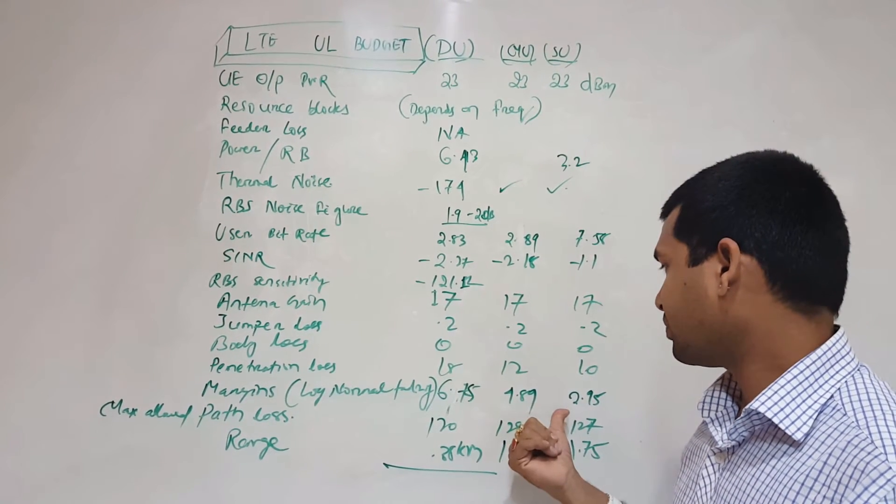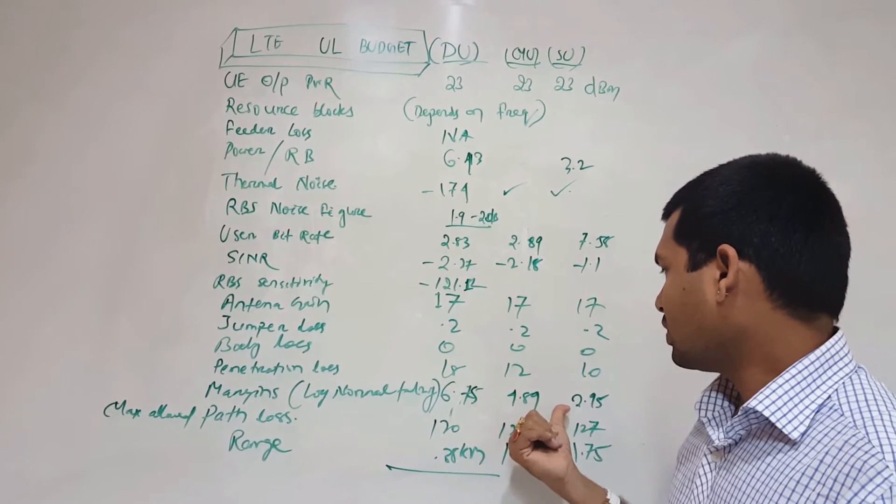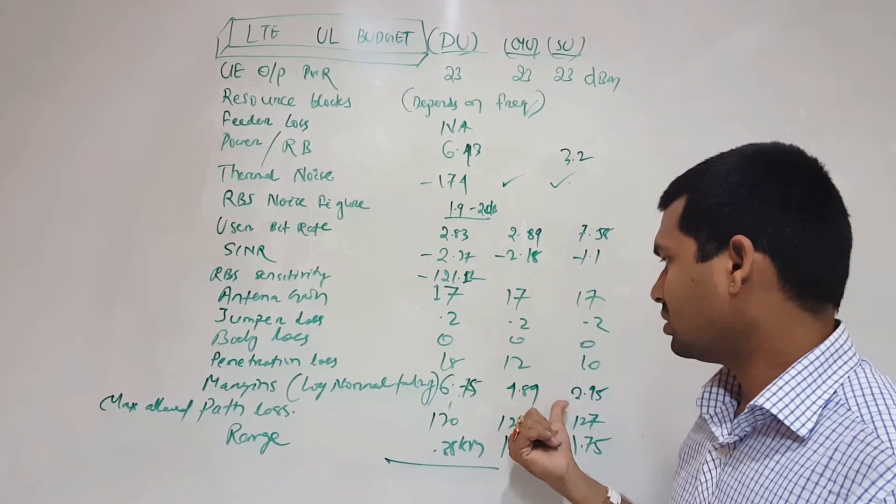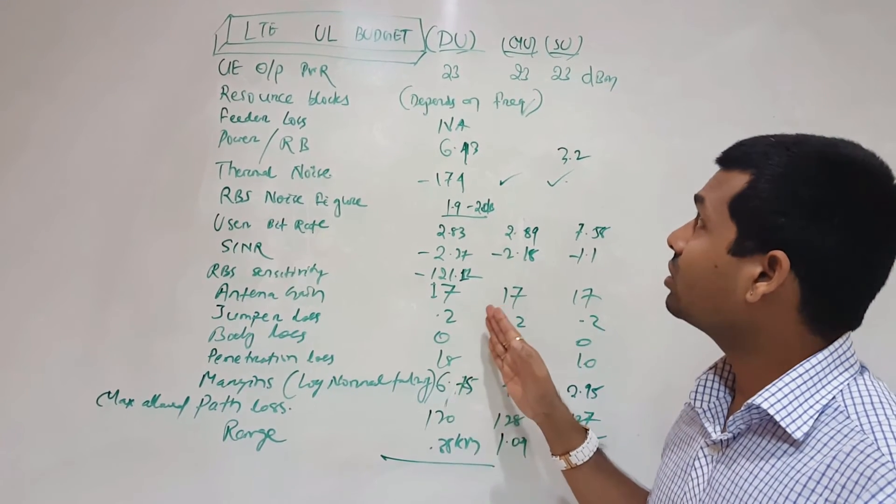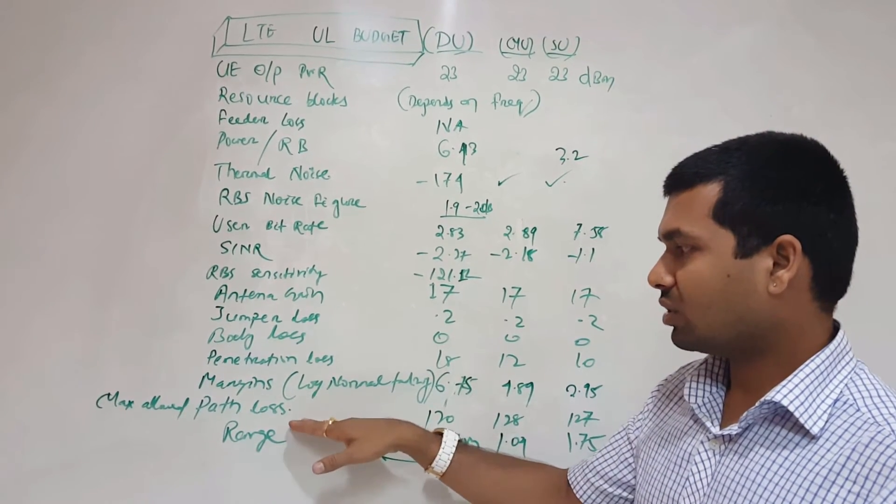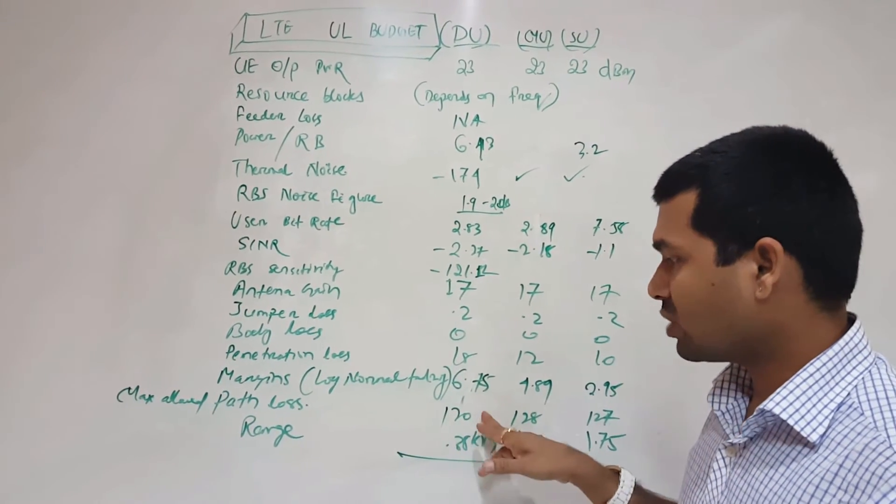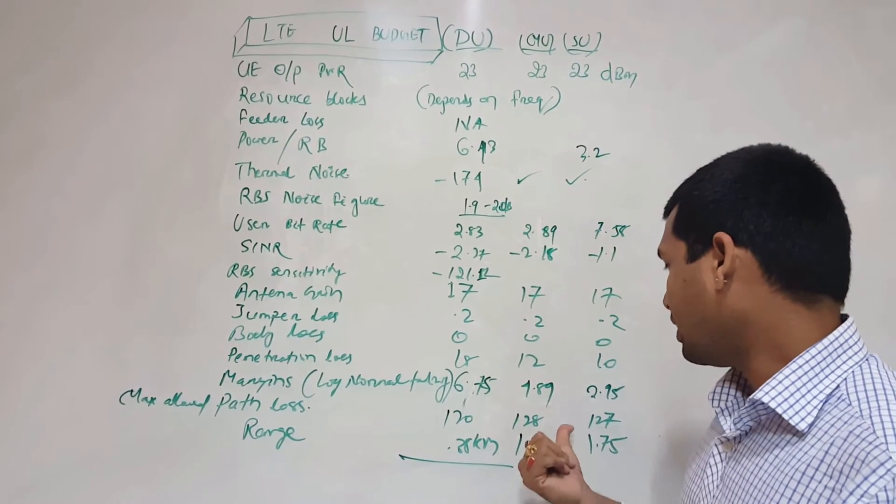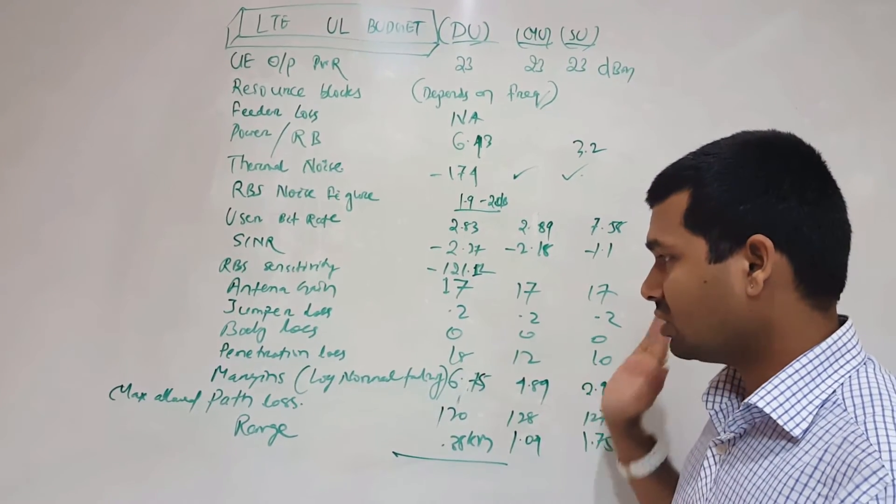Then we have calculated the maximum path loss under 120 for dense urban and 127 or 128 for other areas.